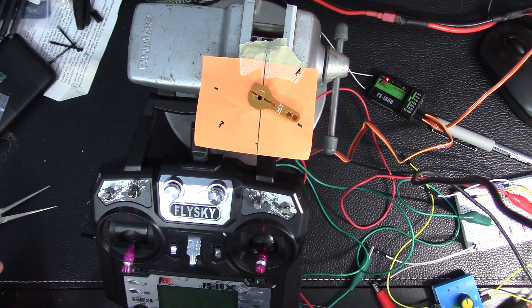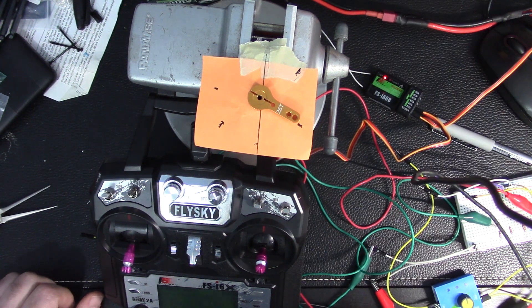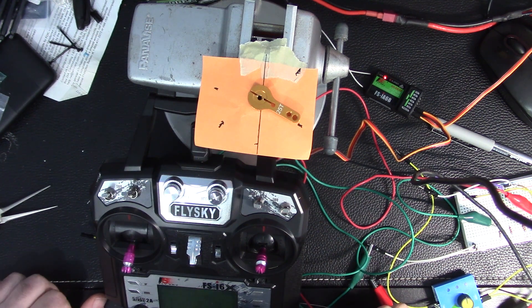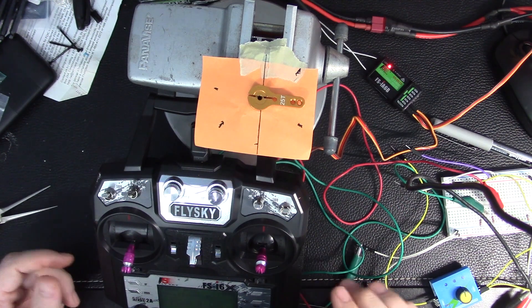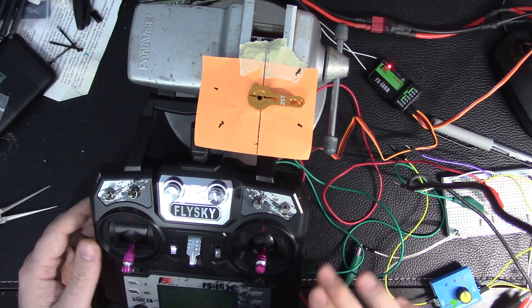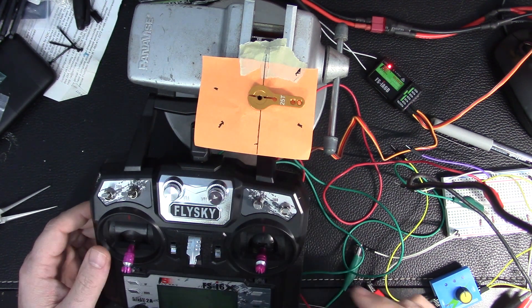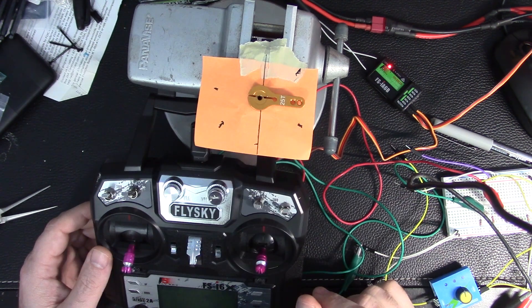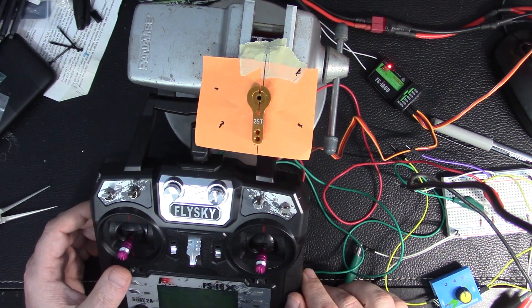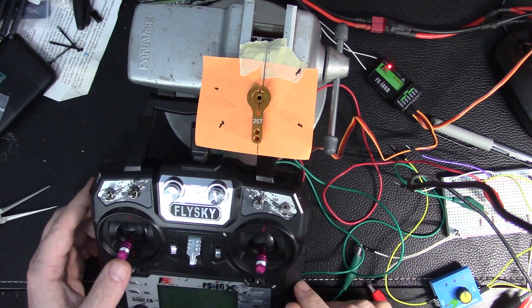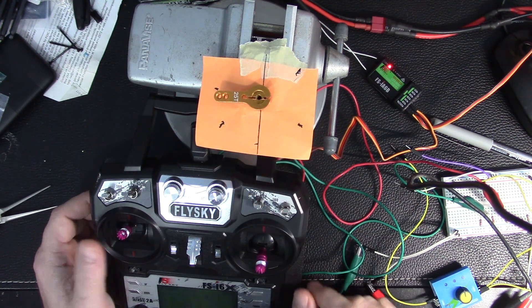We've got the receiver plugged into channel three right now. We're powered back up and we can see that zero for that channel is basically 90 degrees from neutral. So let's go to neutral. Neutral seems neutral. Let's go to 100.